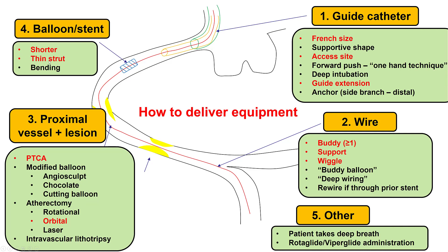We can also change the equipment — for example, use a shorter stent or a thinner strut, more deliverable stent. Other general approaches include having the patient take a deep breath to change the configuration, or administering Rotaglide or Viperglide through the guide. In this particular case, we used a large 8 French guide with a right femoral approach for supportive access, a guide catheter extension, a buddy wire which did not work, and eventually switched to a wiggle wire which was useful. We also did multiple additional balloon inflations and had already performed orbital atherectomy, and tried various different types of stents.